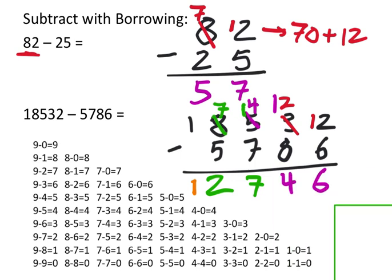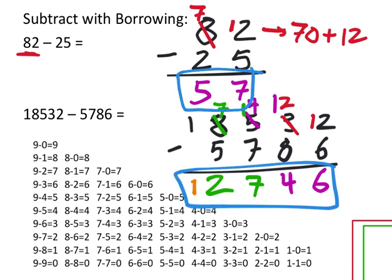So, then, what do we get as the full difference here? So, the difference between 18,532 and 5,786 is 12,746. There it is. There's our two answers there. Let's box those in so we know there are answers. There it is.